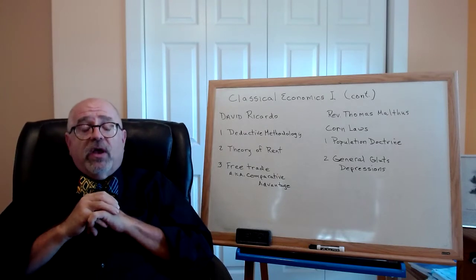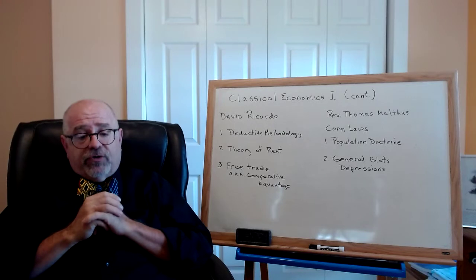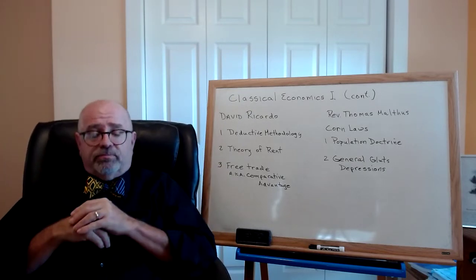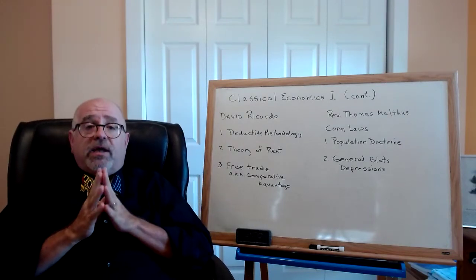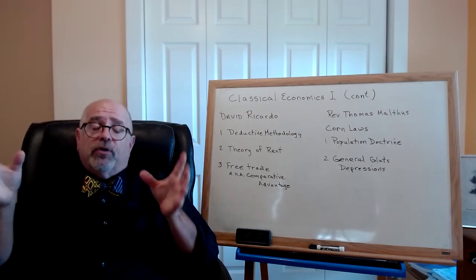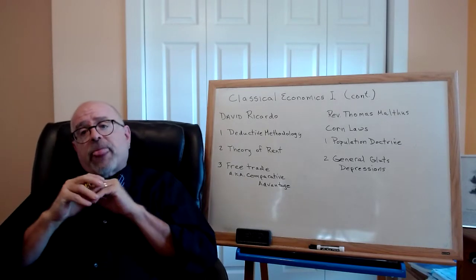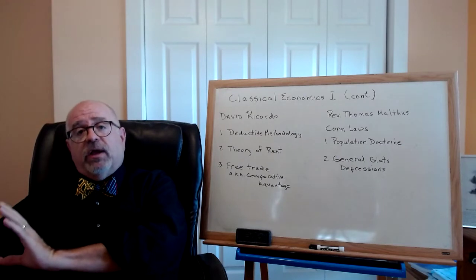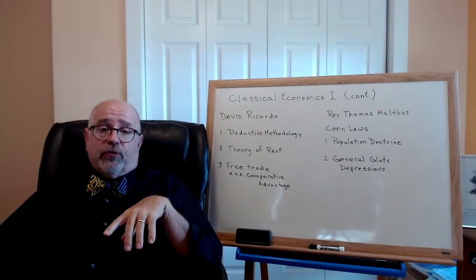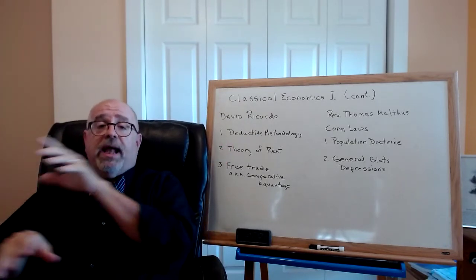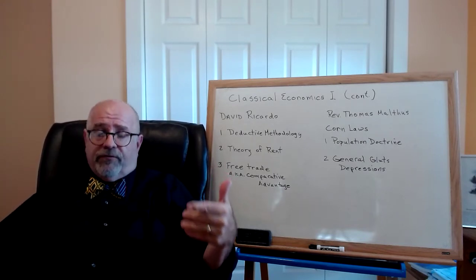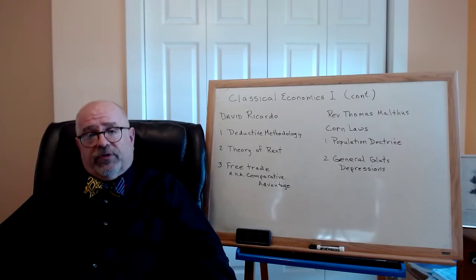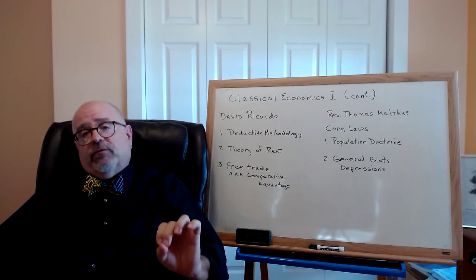The third thing Ricardo contributed is a deductive analysis of free trade. His example was completely theoretical. He said, if you have country one and country two, and they both produce two goods — say, wine and cloth — if one country has an absolute advantage in cloth and the other has an absolute advantage in wine, then the more efficient producer of wine should export wine to the one who is more efficient in production of cloth. When they exchange, the efficient good goes to the opposite market, the cost to consumers goes down, and both sets of consumers in country one and country two improve their standard of living. That's called absolute advantage, and that's fairly obvious.